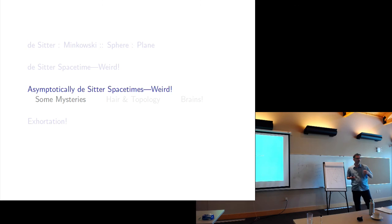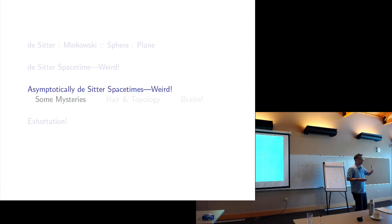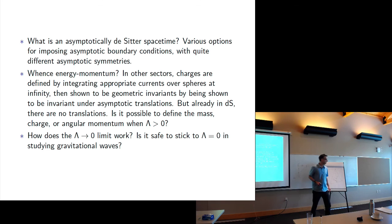We want to talk about spacetimes that maybe start with a big bang but have positive lambda — what happens as t goes to plus infinity. Those are the spacetimes we want to study the asymptotics of in the positive lambda setting, and the asymptotics are going to be de Sitter-like, so we call them asymptotically de Sitter.